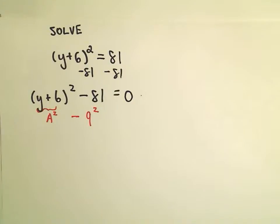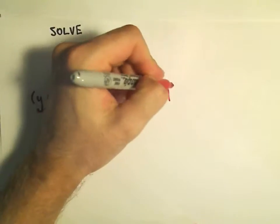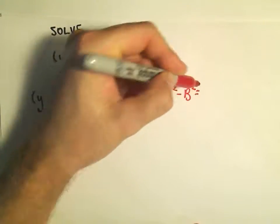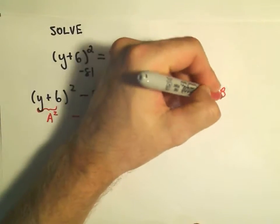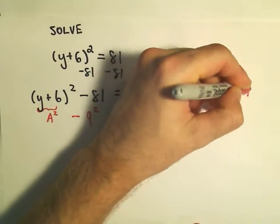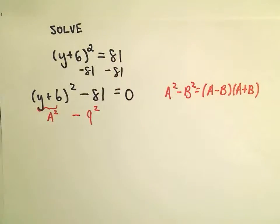Okay, and remember a squared minus b squared factors nicely. a squared minus b squared is just a minus b times a plus b. So that's what I'm going to do in this case.